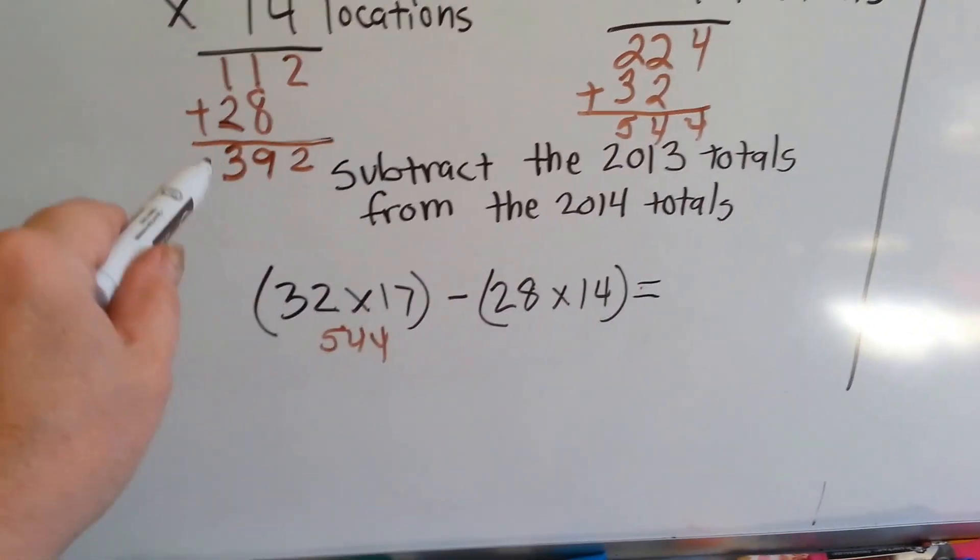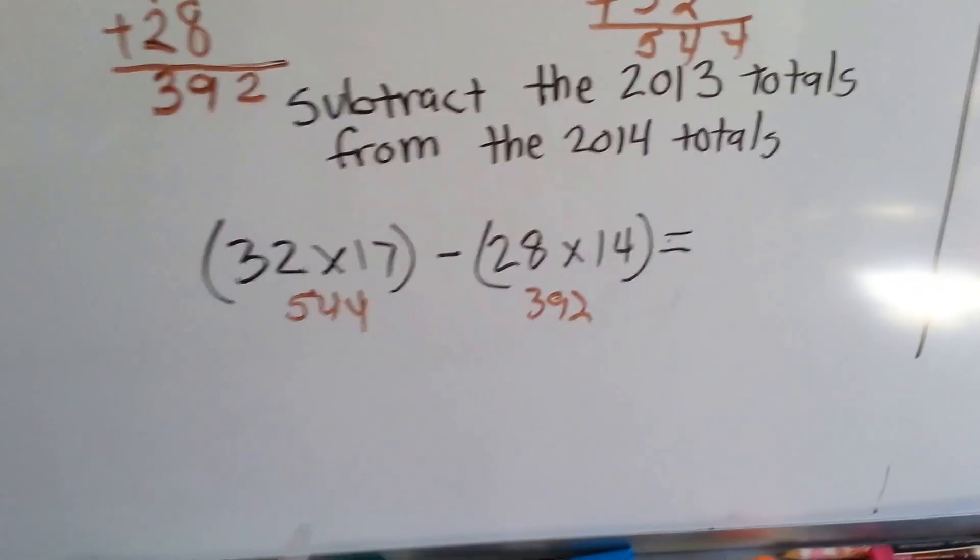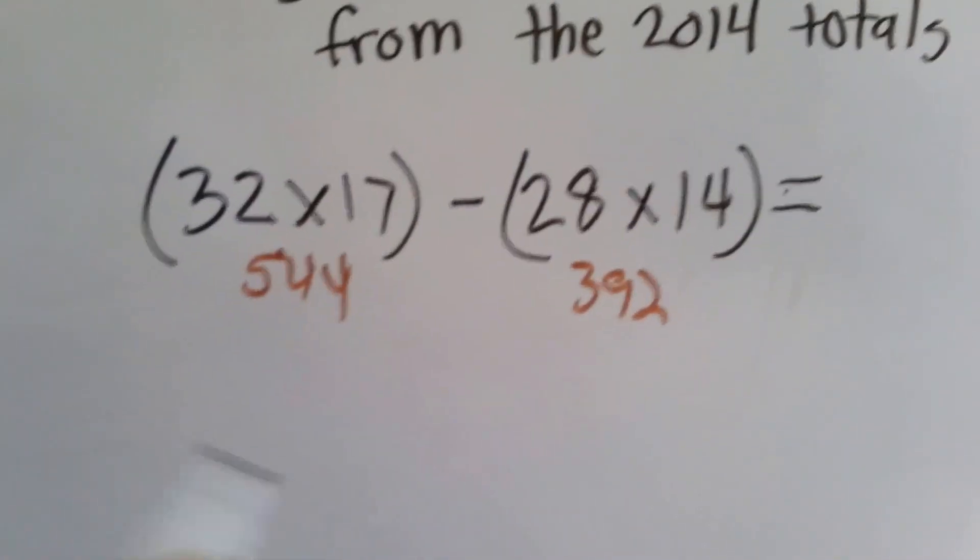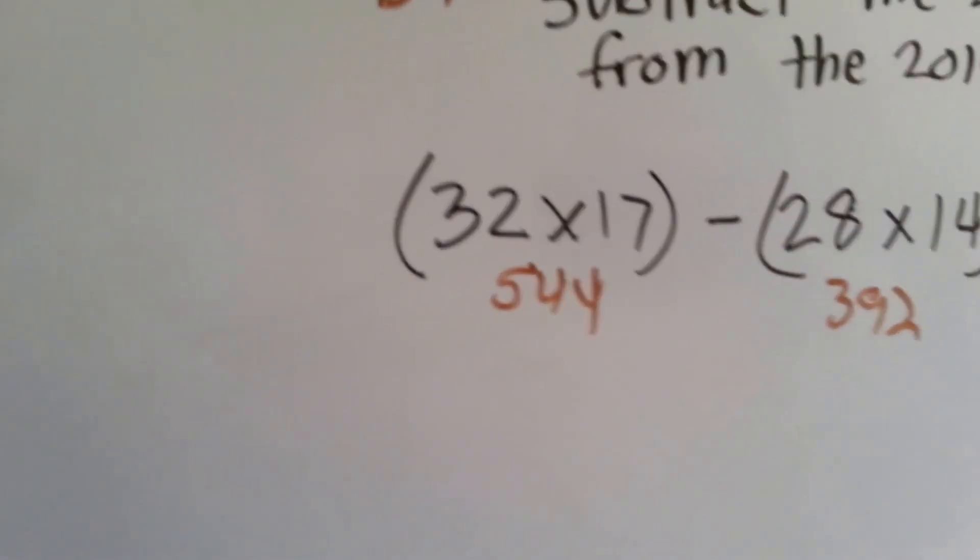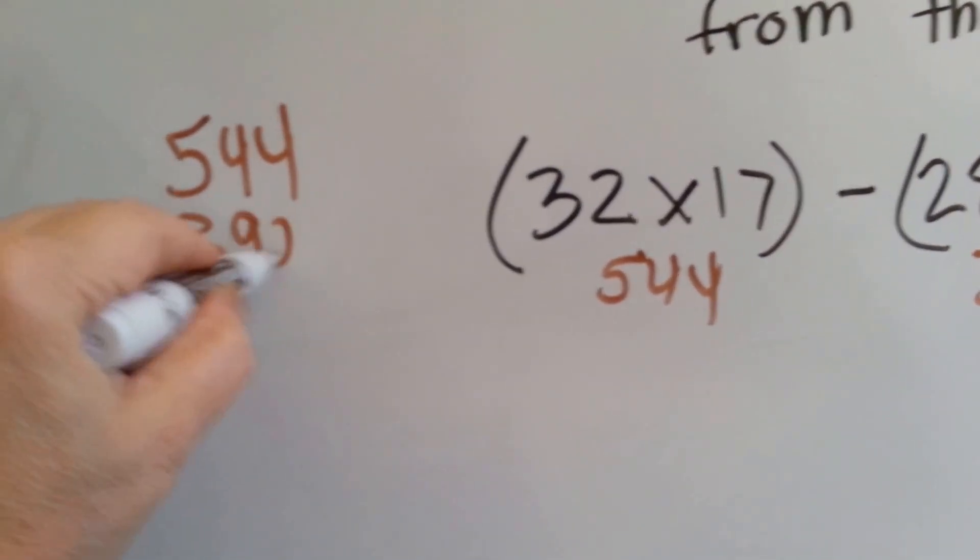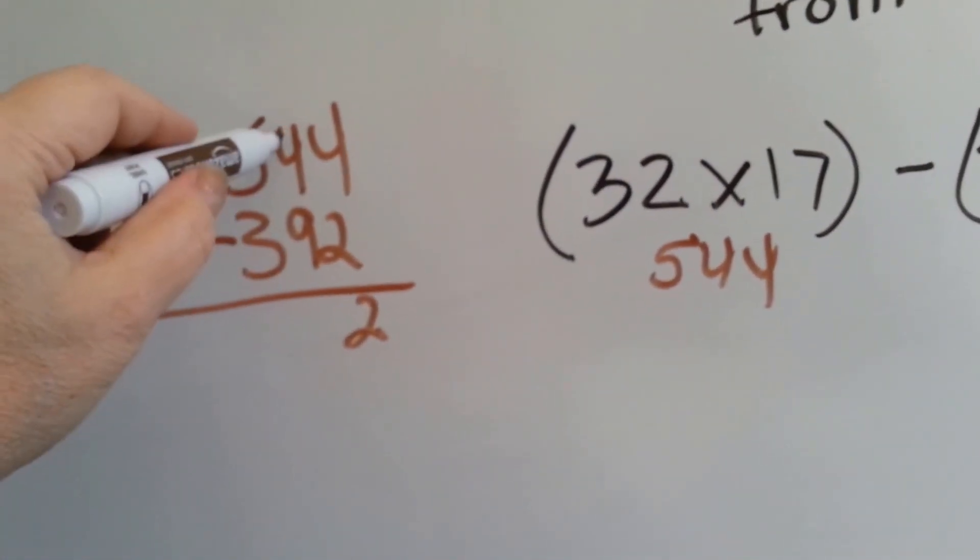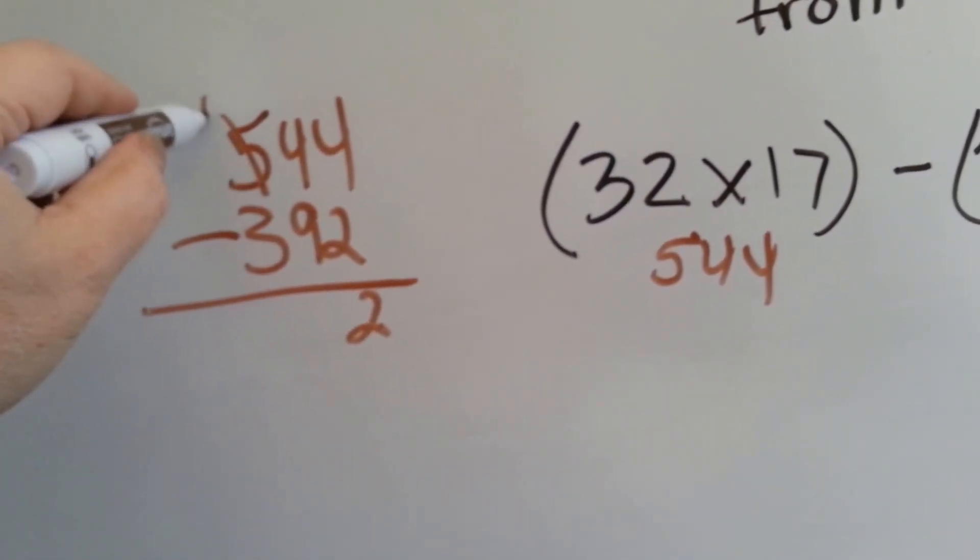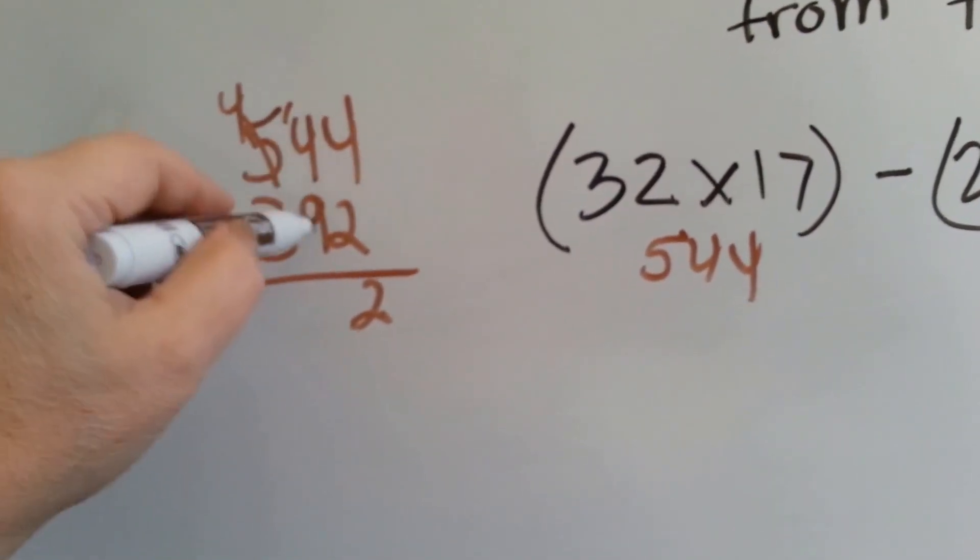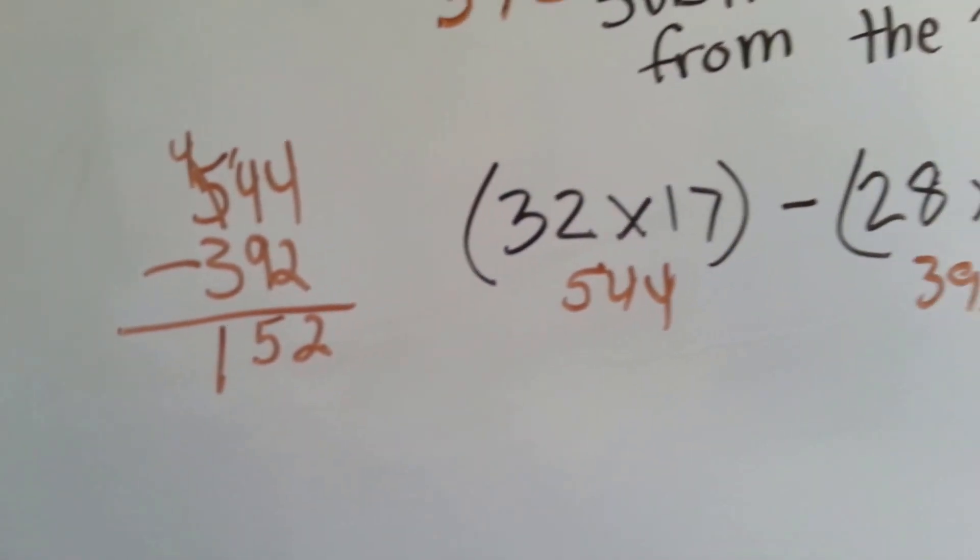And we know in 2013 it was 392. Now we need to do our subtraction. So let's stack them so that we can subtract them easier. 544 minus 392. 4 take away 2 is 2. Can you have 4 and take 9 away? No. So we've got to borrow from the 5. It becomes a 4. And the 4 becomes a 14. 14 take away 9 is 5. And 4 take away 3 is 1. So we have a difference of 151.